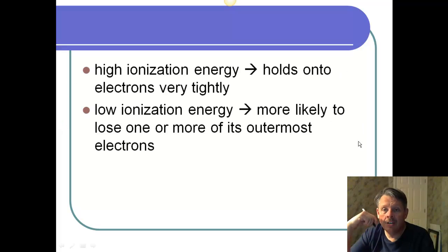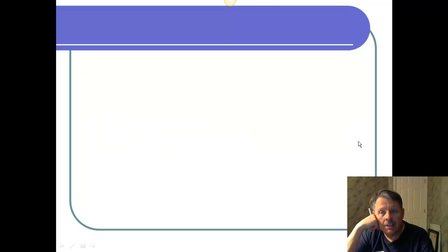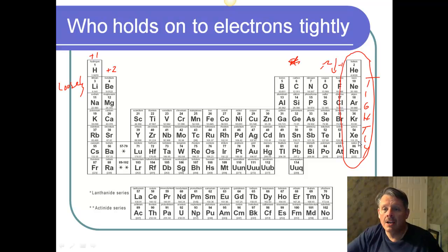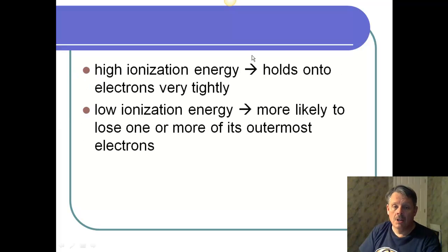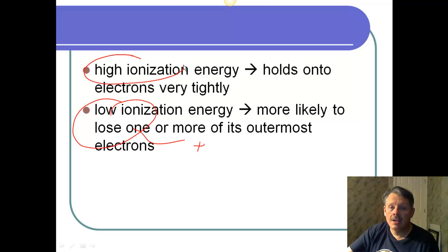So high ionization energy, that means they hold onto their electrons very tightly. So the things that are on the right over here, these have a high ionization energy, and these have a low ionization energy. Low ionization energy says it's more likely to lose an electron. So a low ionization energy would be something that took on a positive charge when it was an ion. And the high ionization energy things would tend to take on a negative charge as long as they're not a noble gas.